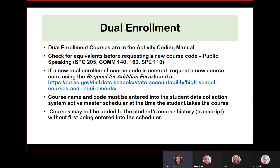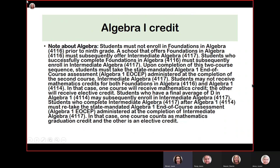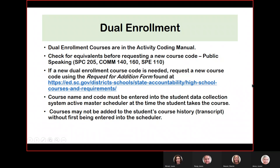For dual enrollment courses, it is imperative that a district or school does not request a course code for a dual enrollment class after a student begins the class. Nicole Ivory in our office creates course codes; if you need a dual enrollment course code, fill out the request for addition form at the link provided and send it to her. Also, before requesting a new course code, please look for equivalents. For example, public speaking has four equivalent course codes, so please check those first.